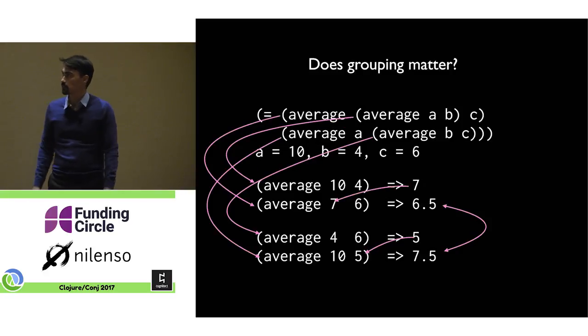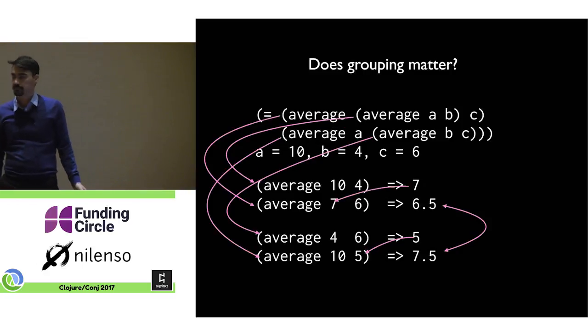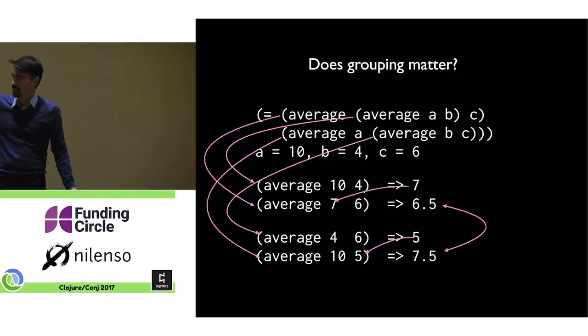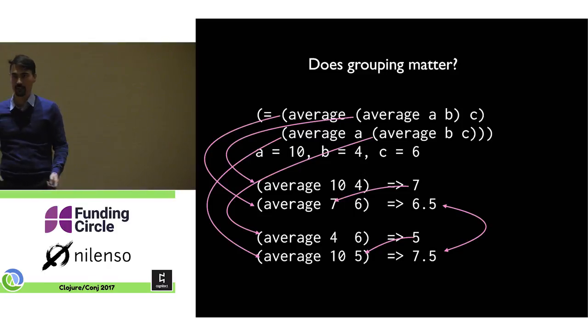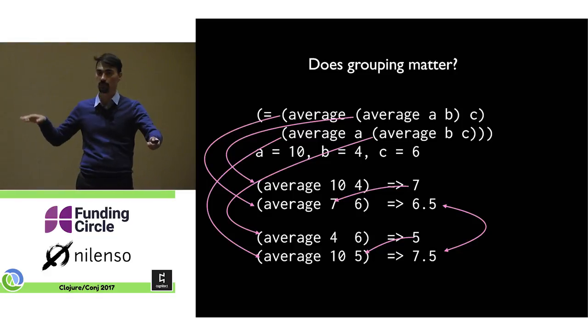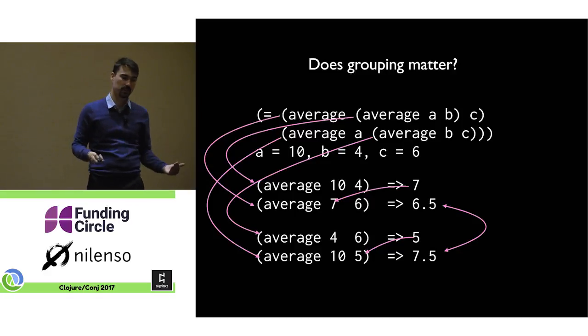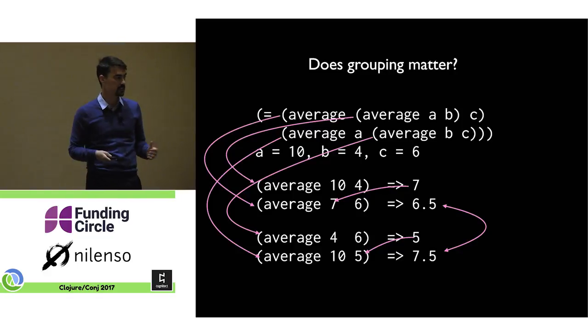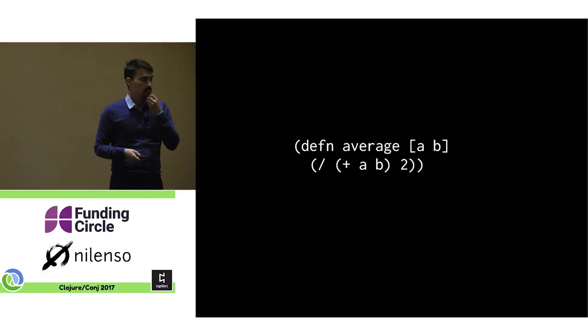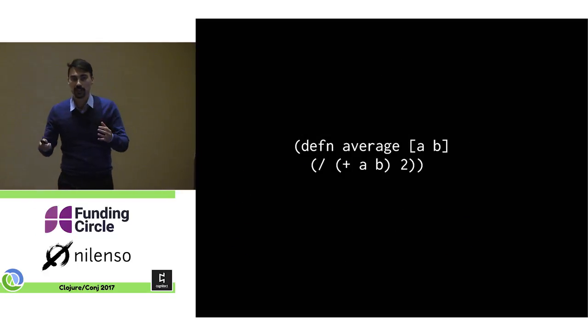But if we do grouping, so we add a third number, C. So we have A and B, 10 and 4, we get 7. And then we average that in with 6, we get 6.5. Or we could go on the second line, we can do 4 and 6, we get 5. And we average 10 in with that and we get 7.5. So these are different. So it's the order, I mean the grouping does matter, the order doesn't matter. But I want grouping to not matter.